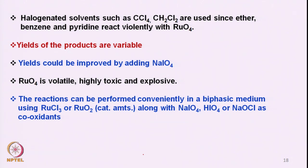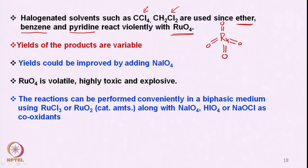Halogenated solvents such as CCl4 and dichloromethane are used because ether, benzene, and pyridine react very violently with ruthenium tetroxide. Looking at the structure of RuO4, four oxygen atoms are attached to the ruthenium, making it highly electrophilic — which is precisely why ether, benzene, and pyridine all react very violently with it.